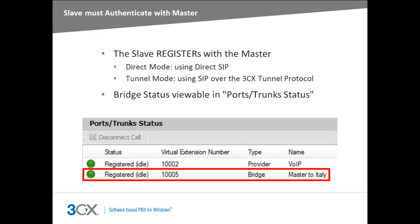Authentication occurs by means of a SIP registration, which takes place when the slave initiates the connection to the master PBX. Once the slave authenticates with the master, the virtual extension number will show up as registered in the ports/trunk status node.